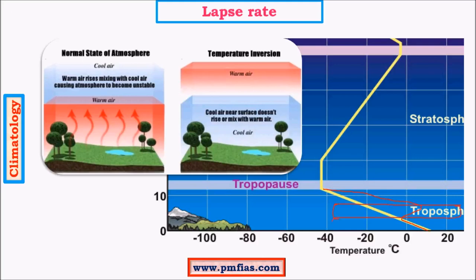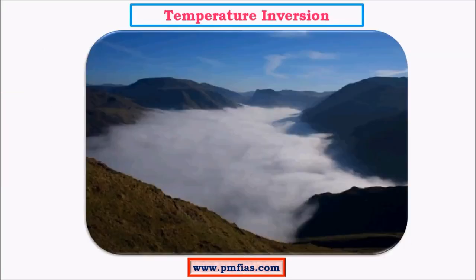So we can say that a warmer air mass is sandwiched between a colder air mass at the bottom and another colder air mass at the top. This is the usual condition of temperature inversion — the temperature profile is comparatively different because of it. This is called intermountain valley temperature inversion, which we'll be studying in detail.